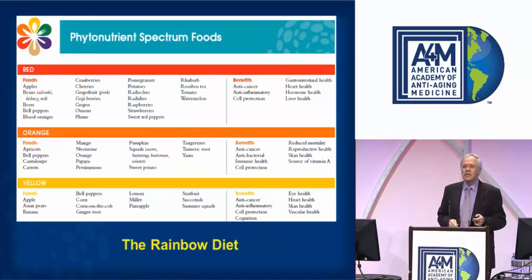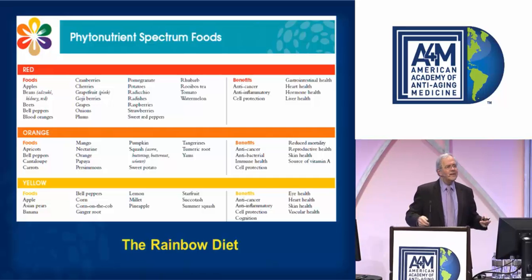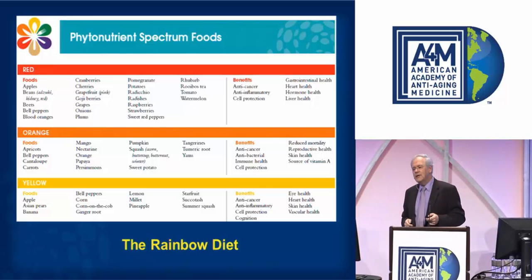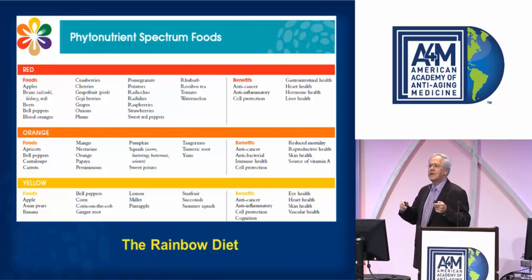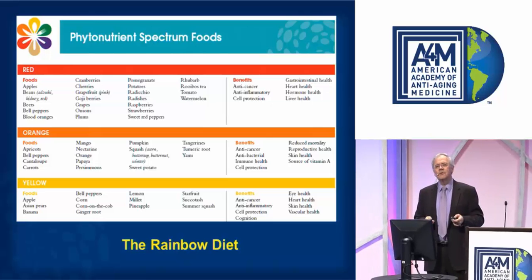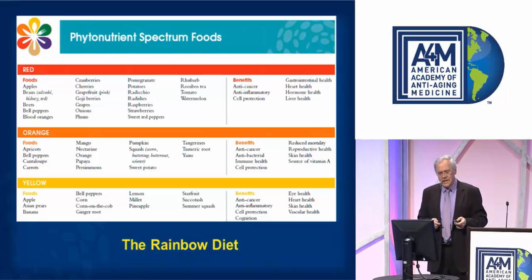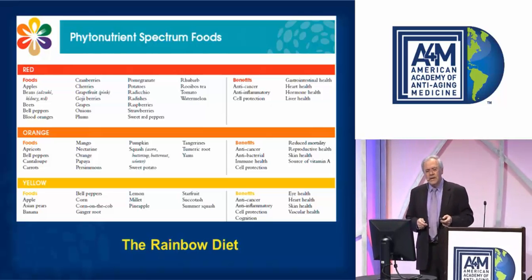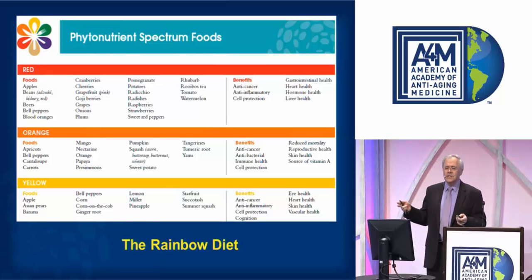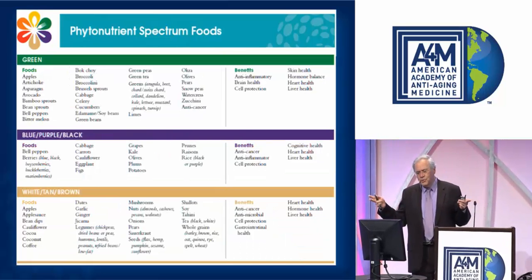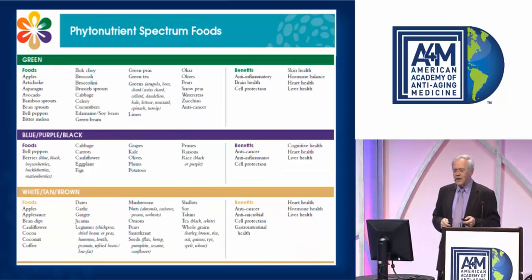We need to think of the rainbow diet — eating foods of the various colors of the rainbow several times each day: red, orange, yellow, green, blue, purple, black, white, tan, and brown. This is very easy to remember when preparing meals.